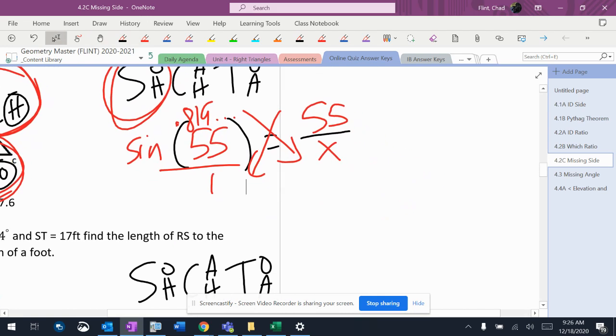Cross-multiply, and this is where I end up with 55 equals 0.819x. So, I'm going to divide by that decimal.